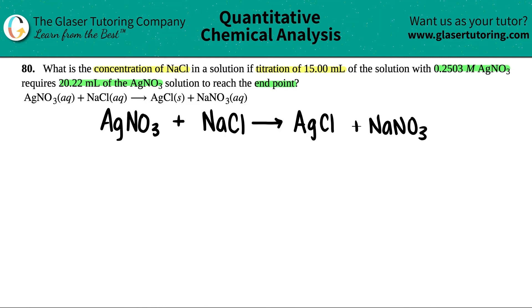The next thing I'm going to do is list out everything that they told me and what we're trying to solve for. They told us that we had a molarity of the silver nitrate, 0.2503 molarity, and it required 20.22 mL of the same solution. They told us that we need to find the concentration of the sodium chloride, NaCl, and they said that we needed 15 mL of the solution. And we're looking for the concentration, which is the same thing as molarity.